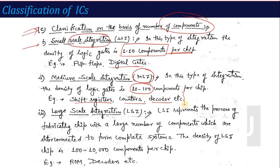If we increase the number of components beyond 100, up to 10,000 components, the technology is called Large Scale Integration (LSI). Examples of LSI include RAM, ROM, and memory chips — these fall into the large scale integration category.